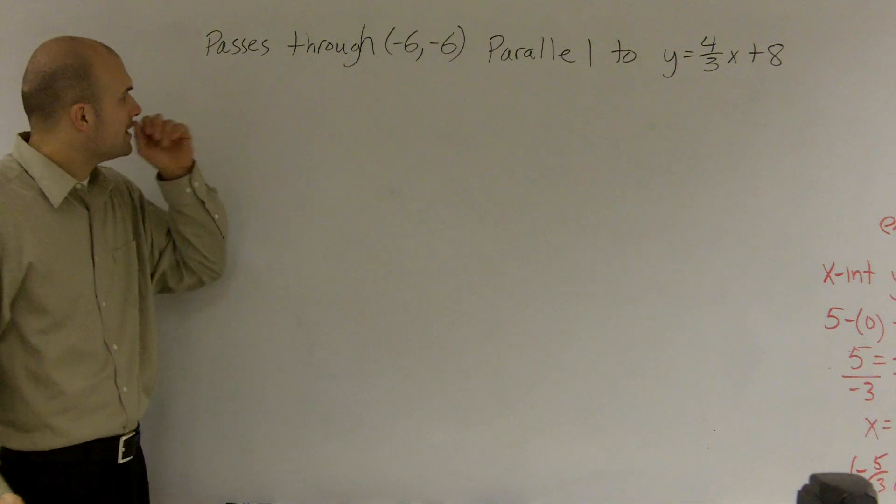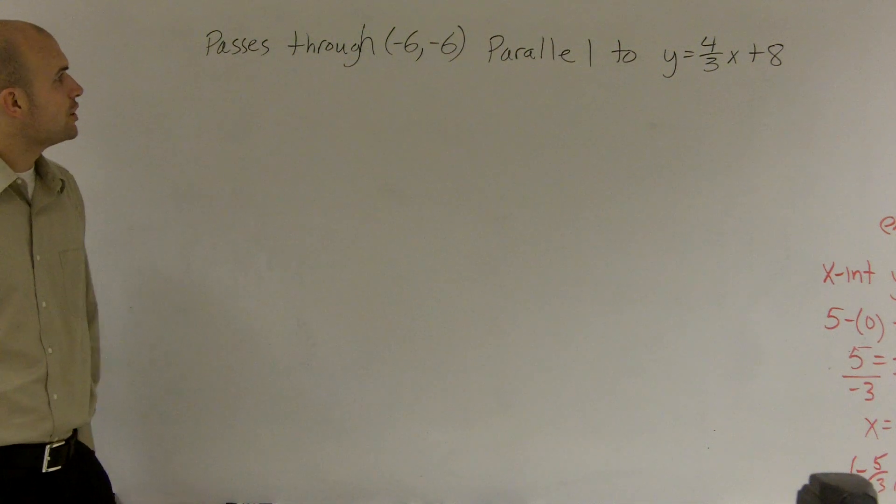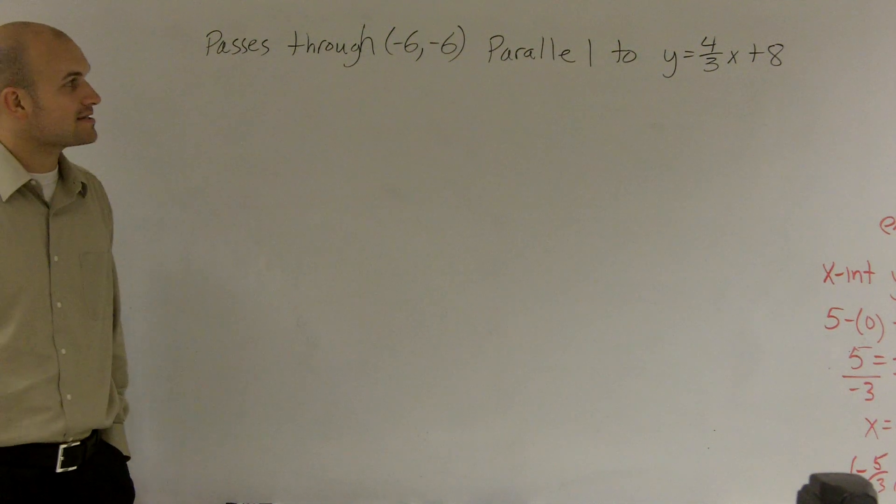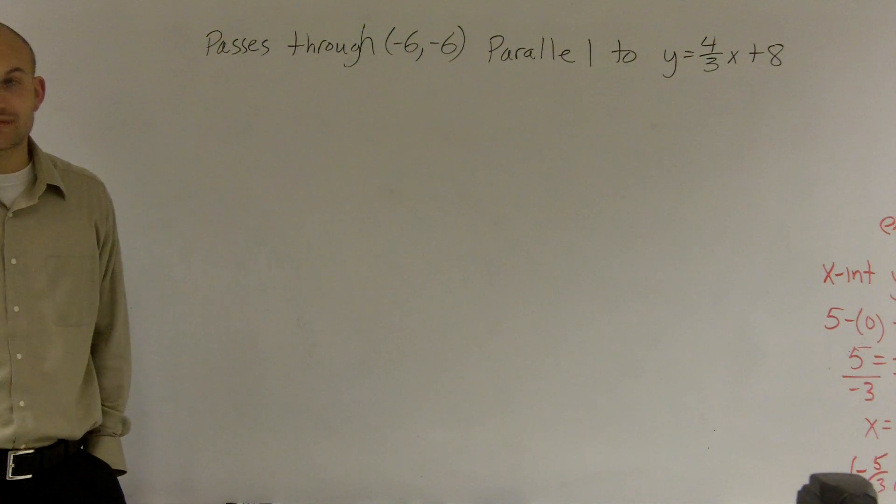All right, what I'd like to do is show you how to find a line that goes through the point (-6, -6) and is parallel to the line y = 4/3x + 8.